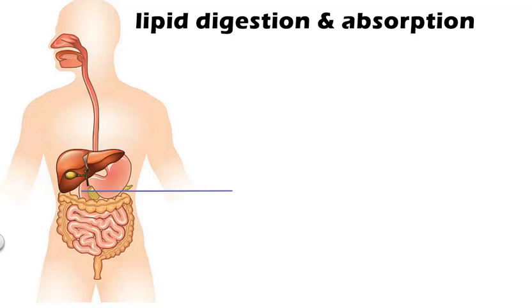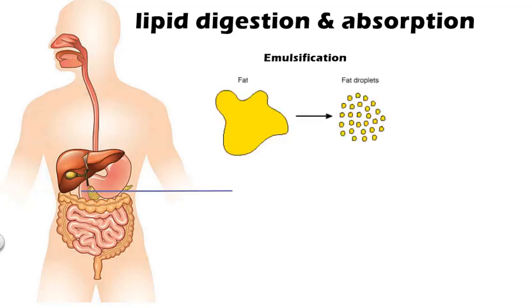From the stomach, the unchanged portion will enter into the duodenum. In the duodenum, there is a unique process of fat digestion. This process is called emulsification. Emulsification means dispersion of lipids into smaller fat droplets due to reduction in the surface tension.